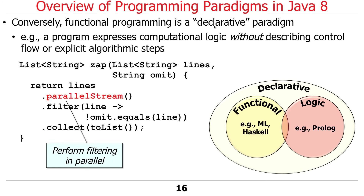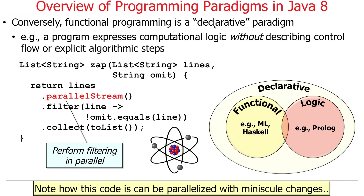Also worth noting: what's happening inside 'filter' is what's called a stateless lambda. That means there's nothing there that requires state — the only thing happening is checking whether a condition is satisfied. That'll be really important as we go further. We'll cover all of this in much more detail later, so don't worry if the syntax looks weird right now. We can parallelize this with minuscule changes, and it's the wonderful declarative model that lets us do that.